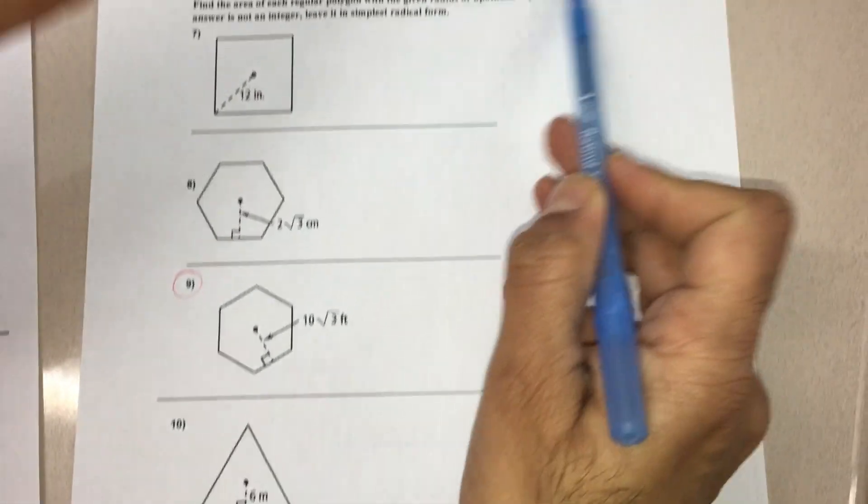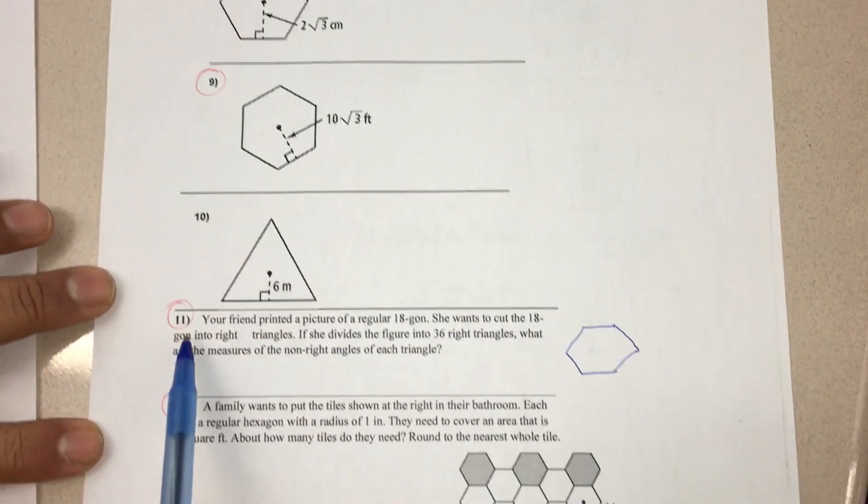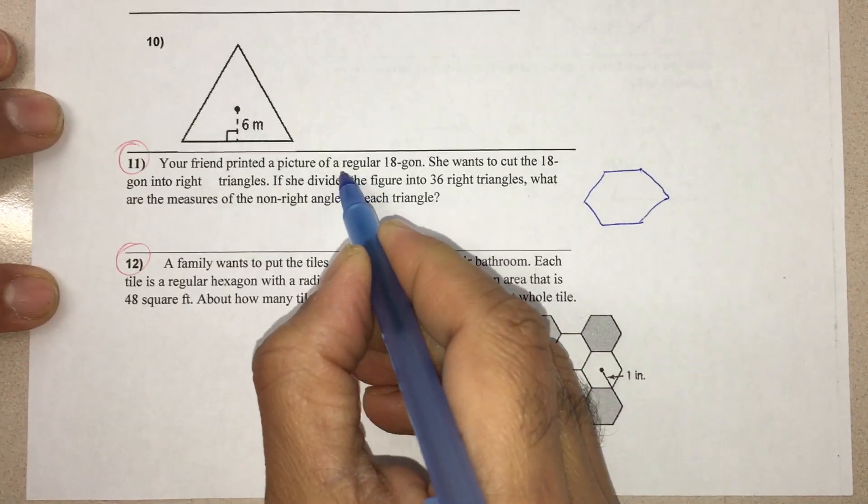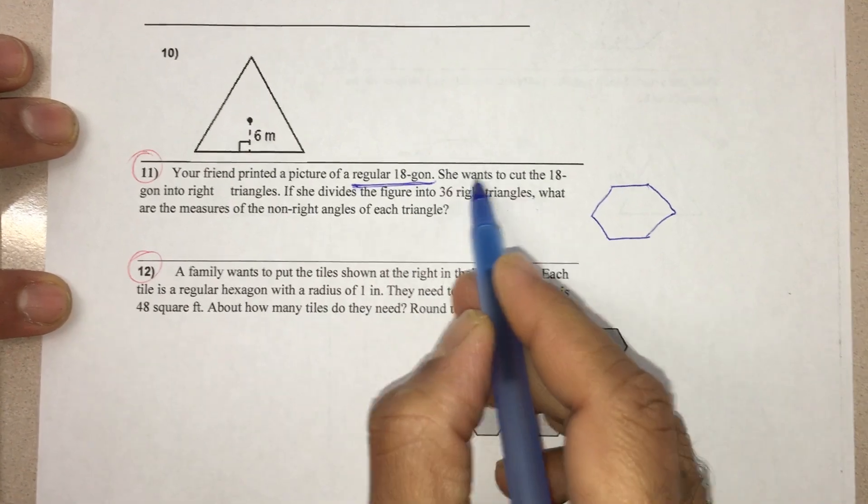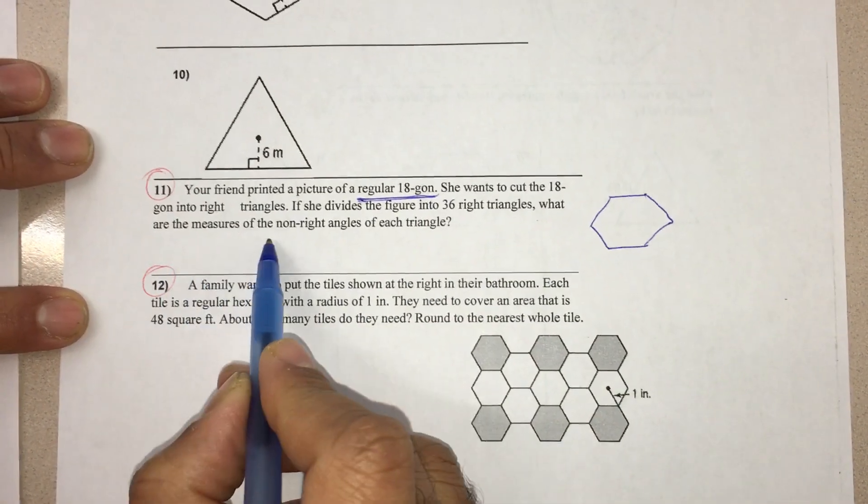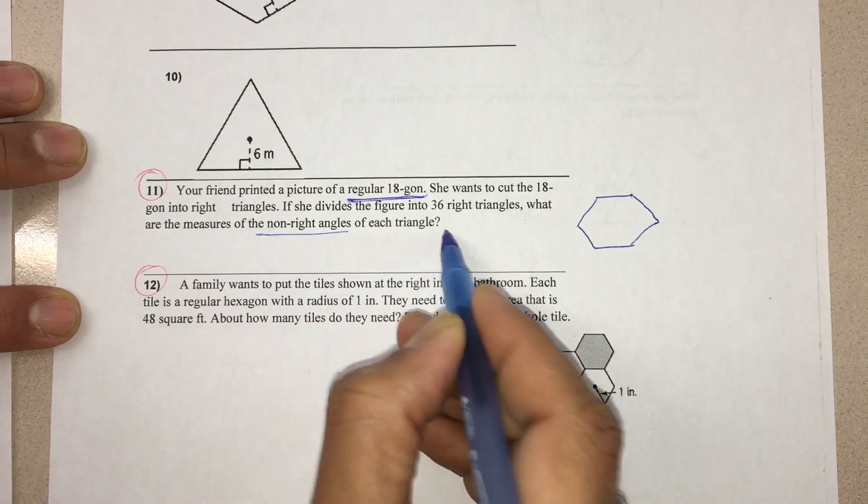In this homework 6.5, we have the 11th problem like this. Here, the given regular polygon is an 18-gon. She is cutting that into 36 right triangles. What are the measures of non-right angles of each triangle?